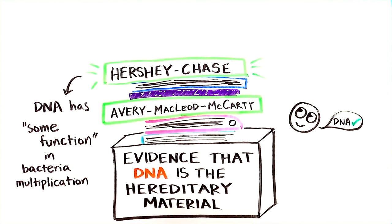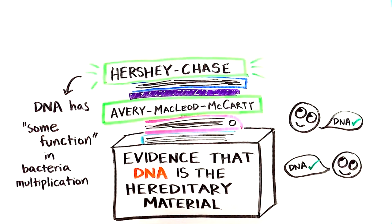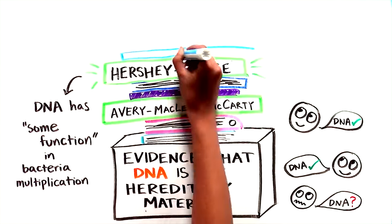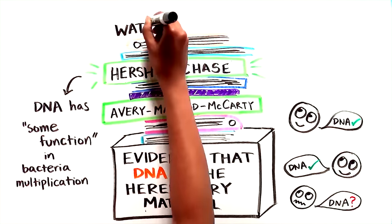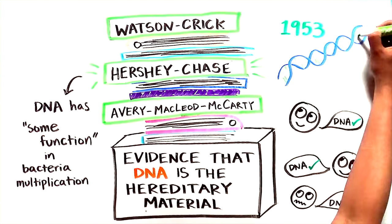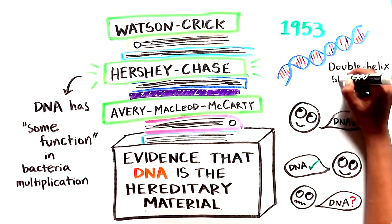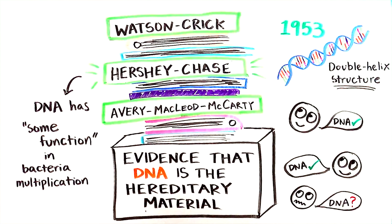Word about the Hershey-Chase experiment spread quickly and helped to convince many scientists that DNA indeed was the molecule of heredity. And the remaining skeptics could not hold out for much longer. A year later, Watson and Crick published their model of the DNA double helix, which provided an elegant explanation for how DNA, with such a simple structure, could be replicated and pass along information from parents to offspring.